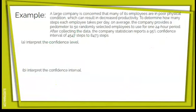A large company is concerned that many of its employees are in poor physical health, which can result in decreased productivity. To determine how many steps each employee takes per day on average, the company provides a pedometer to 50 randomly selected employees to use for one 24-hour period. After collecting the data, the company statistician reports a 95% confidence interval of 4,547 steps to 8,473 steps. Part A: interpret the confidence level.